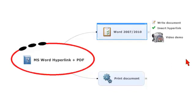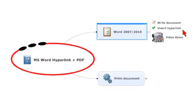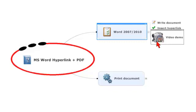Okay, let's just open this up. The first thing, of course, is you're going to want to write your document in Word. Once you've got it written, then you're going to insert the hyperlink itself. I'm going to show you two different ways of inserting hyperlinks, so let's go to our video demonstration.